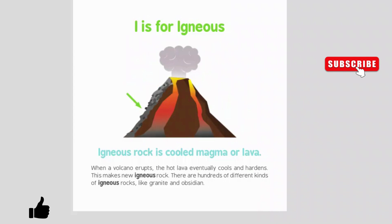I is for igneous. Igneous rock is cooled magma or lava. When a volcano erupts, the hot lava eventually cools and hardens, making new igneous rocks. There are hundreds of different kinds of igneous rocks like granite and obsidian.